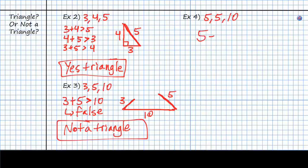And then finally, we say 5 plus 5 is greater than 10. And this is also false. So we know that this is not a triangle.